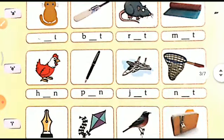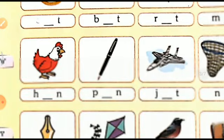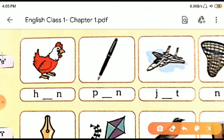Now, we move to the next list, which is of the words containing E, alphabet E. See the first picture very clearly. What is there? It is a hen. What is the spelling of hen? H-E-N.